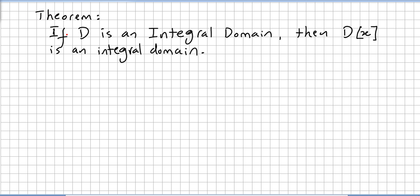This video is still on polynomial rings. We have here a new theorem that says: if D is an integral domain, then the ring of polynomials in D is also an integral domain. We need to show it is a commutative ring with a unity and no zero divisors.